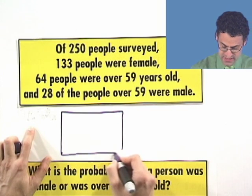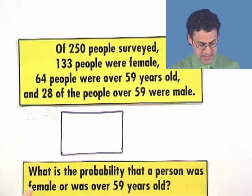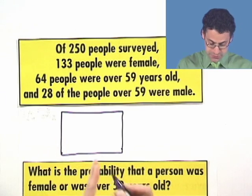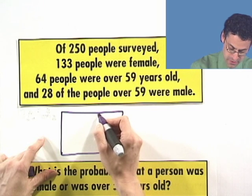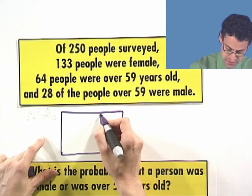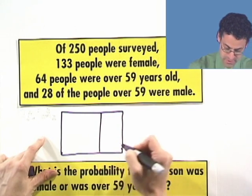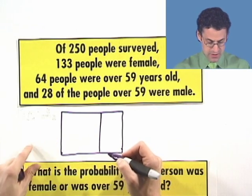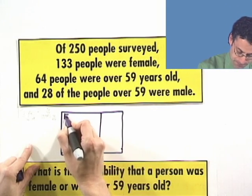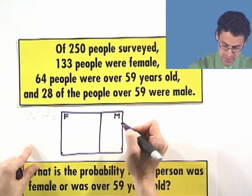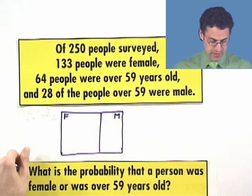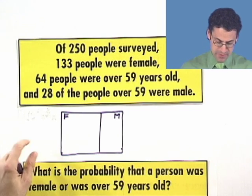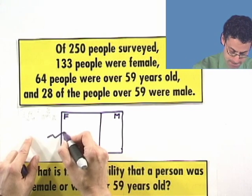Imagine the people sitting inside here, and what we're going to see is that there are two, a natural break between these people. There are the females and the males. Let's put the break right here. So, how many females are there? These are the females. These are the males. Well, I know that 133 of them were female. That means there's 133 in here.